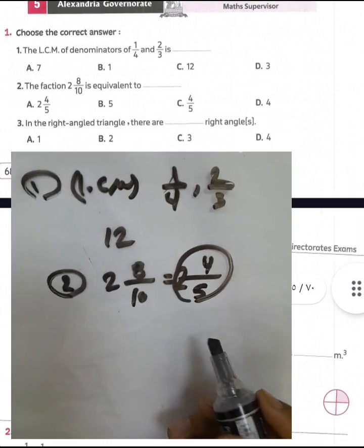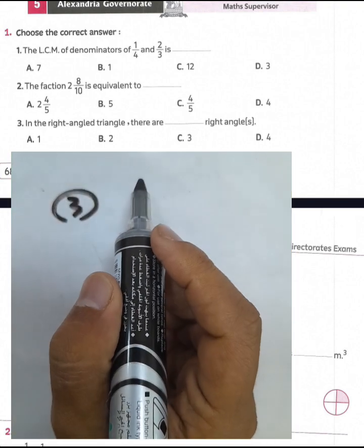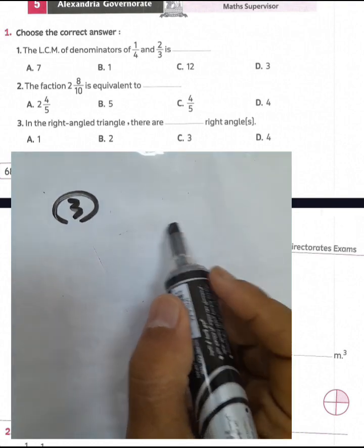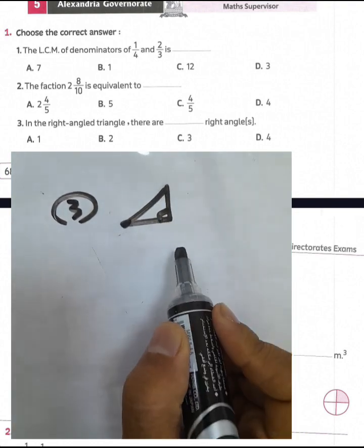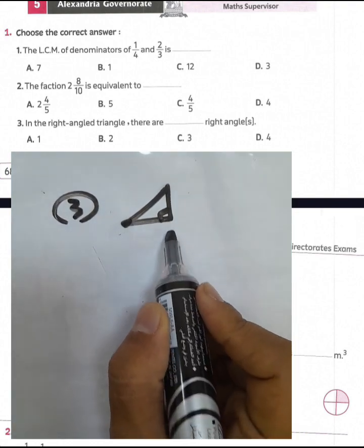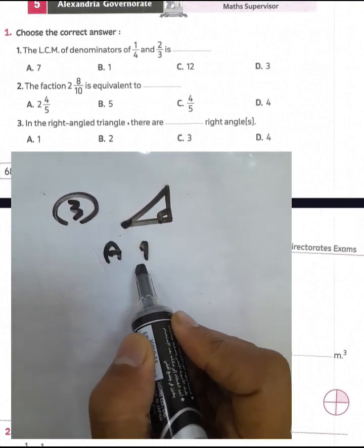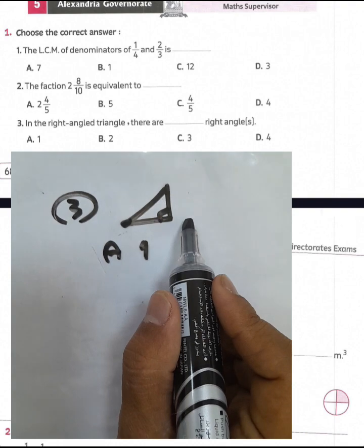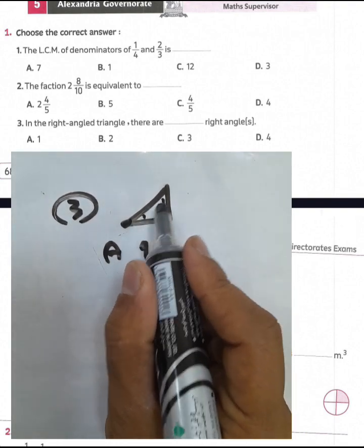Question number 3. In a right angle triangle, there is one right angle. The vertex of this triangle will be 90 degrees, so the result is 1 — choose E. In a right angle triangle, there is one right angle and two acute angles.